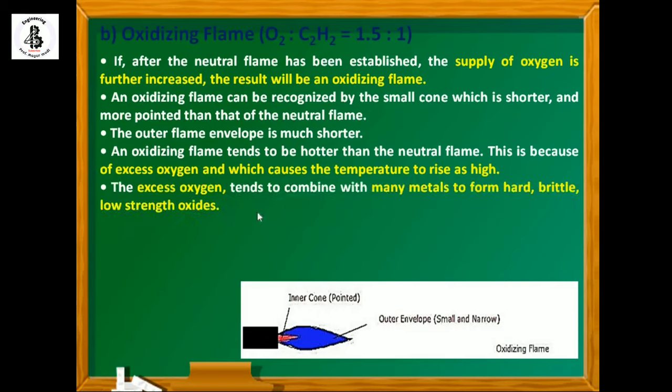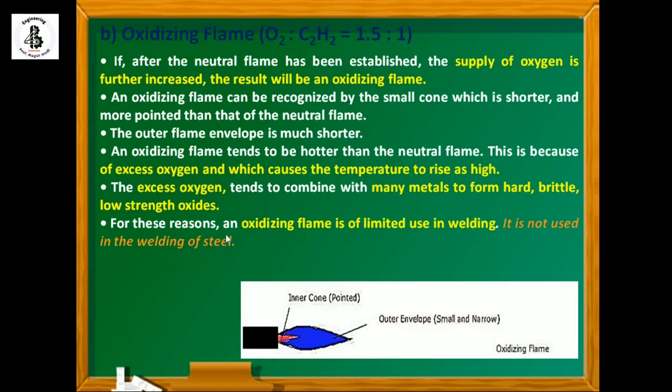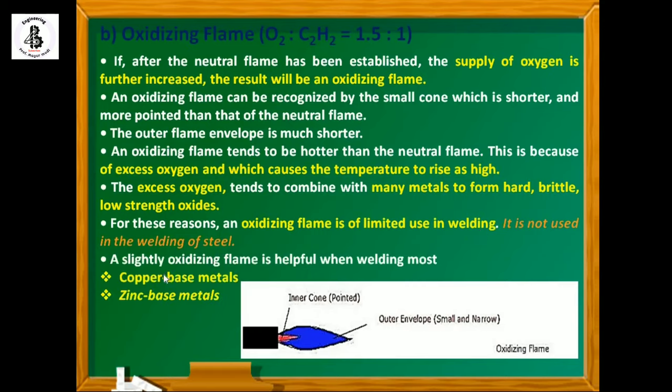The excess oxygen tends to combine with many metals to form hard, brittle, low strength oxides. For these reasons, an oxidizing flame is of limited use in welding. It is not used for welding steels. A slightly oxidizing flame is helpful when welding most of the copper-based metals and zinc-based metals.